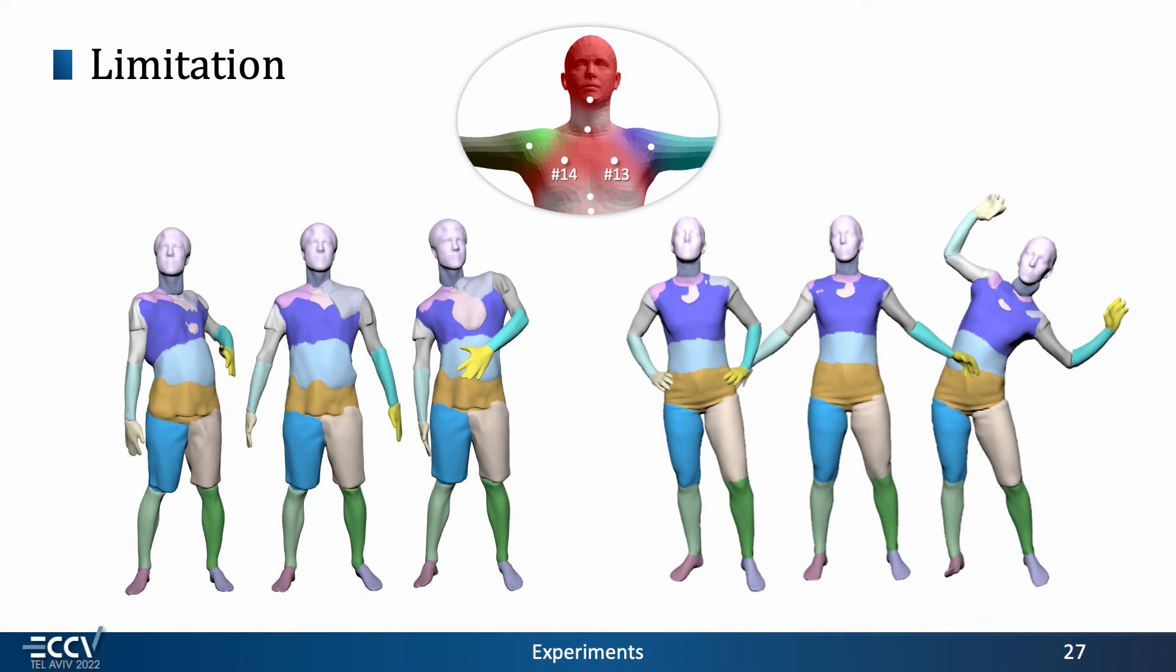When nearby regions undergo drastic movements, our model converges to overlapped parts and shows inconsistent part division during animation.